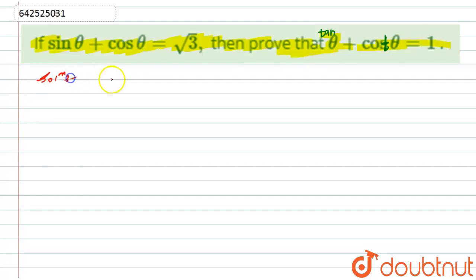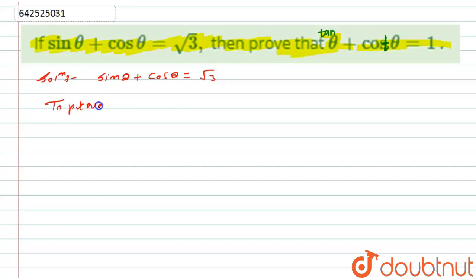So let us start with the solution. First of all, what is given to us: sine theta plus cos theta equals root three. And we have to prove that tan theta plus cot theta equals one.